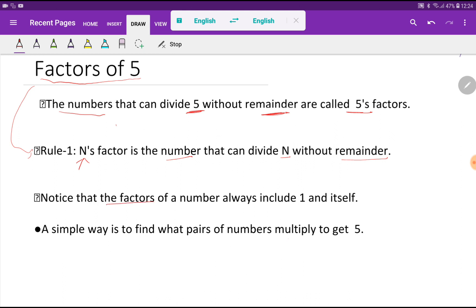Remember that the factors of a number always include 1 and itself. So the factors of 5 will be 1 and itself, which means 5.